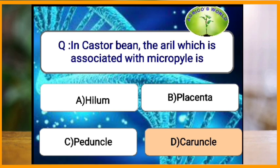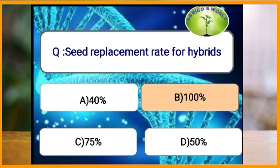What is the seed replacement ratio for hybrids? The seed replacement ratio for hybrids is 100 percent. For self-pollinated crops it is 25 percent, for cross-pollinated crops it is 35 percent, for wheat and rice it is 9 to 18 percent, and for vegetables it is 70 percent.